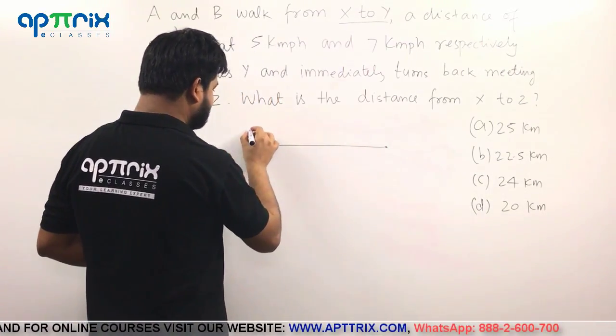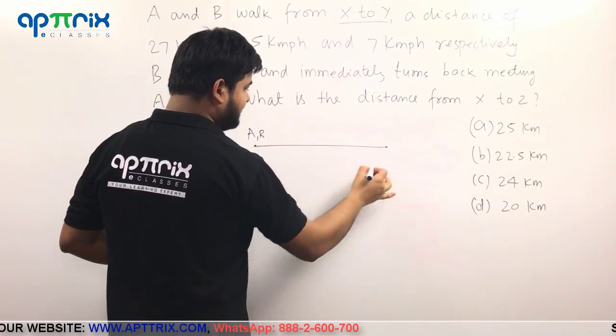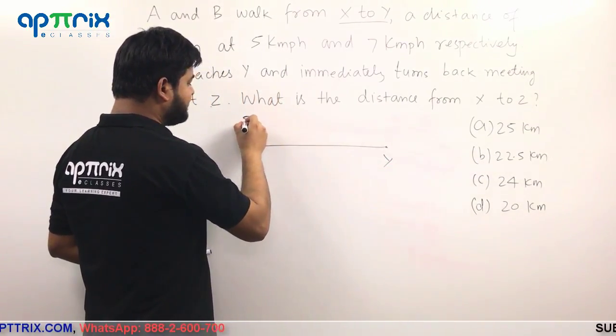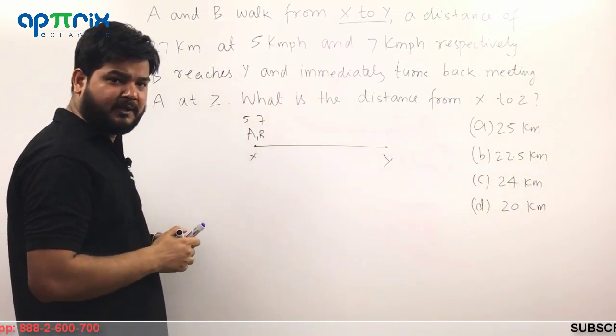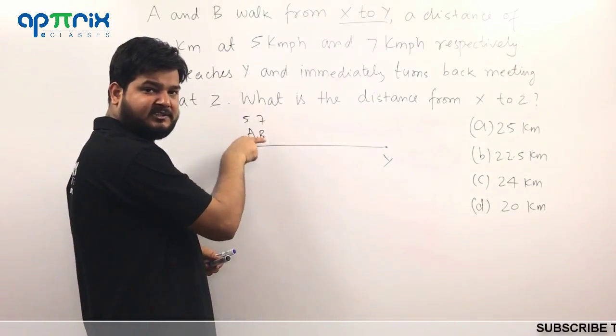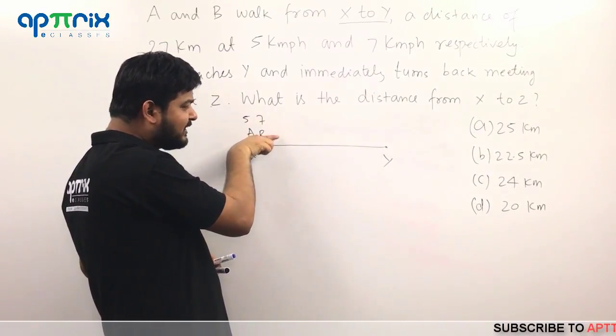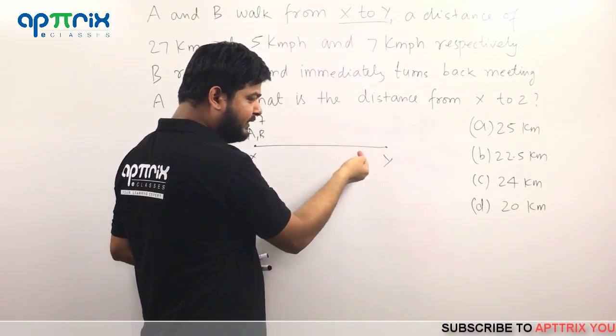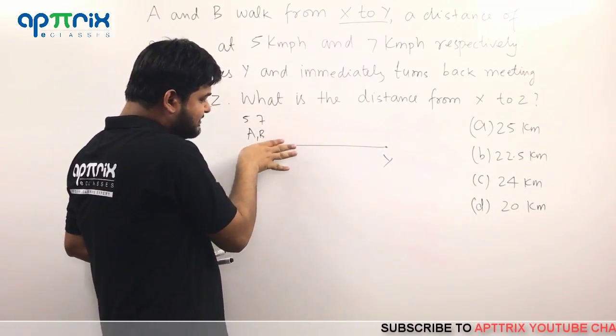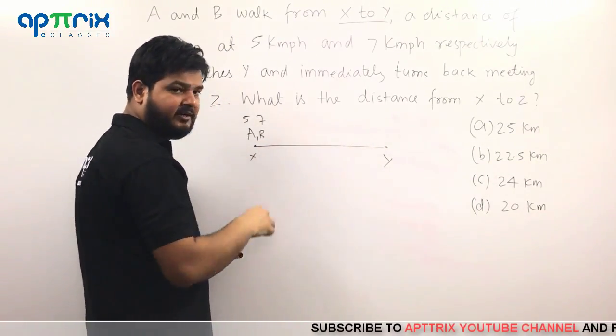The situation is this is A, this is B, this is point X, this is point Y. Look, the speed is given to be 5 and 7 km per hour. B is definitely faster. So what will happen? B will start leading. It will reach Y then it will turn back. While A is somewhere here, it is going to meet it.